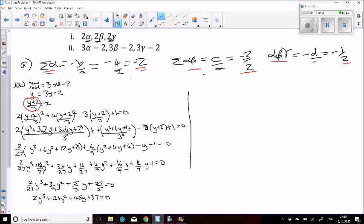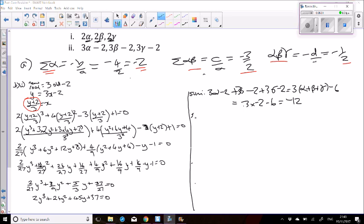Alternatively you can do the sum, the sum in pairs, and the product of the new roots again. So sum: 3 alpha minus 2 plus 3 beta minus 2 plus 3 gamma minus 2. That's 3 alpha plus beta plus gamma minus 6. So that's 3 times negative 2 minus 6, which is negative 12.